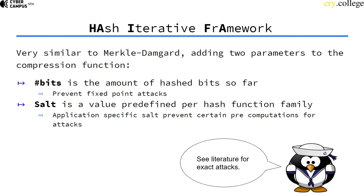The number of bits is mainly there to prevent a certain type of attack — so-called fixed-point attacks — or to make it at least harder to exploit those. The salt is a predefined value per hash function family, so in order to have different salts for different applications, you can prevent certain pre-computation for certain attacks, because you would need to pre-compute for every application that uses a different salt.